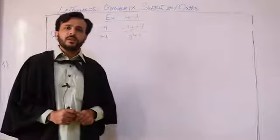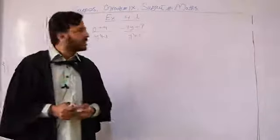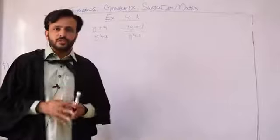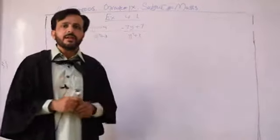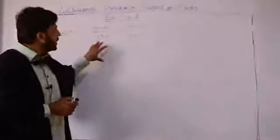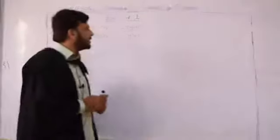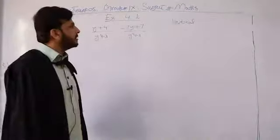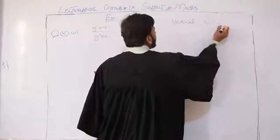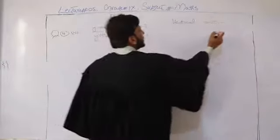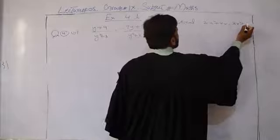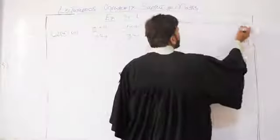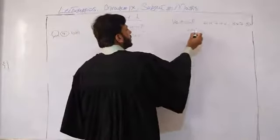Before starting the lecture, let us check our previous knowledge. Students, we had studied how we add algebraic expressions and rational expressions — how we add them. I told you two methods: one was the vertical method and one was the horizontal method. Let me recall your memory. For example, two x square plus four x — one expression — and three x square plus five x — another expression. We can add these vertically.